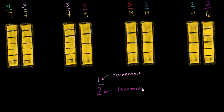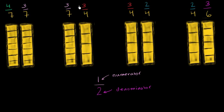Denominator for the bottom number. Now that we know the top number is the numerator of the fraction and the bottom number is the denominator, I want to compare pairs of fractions that have either the same denominator or the same numerator.